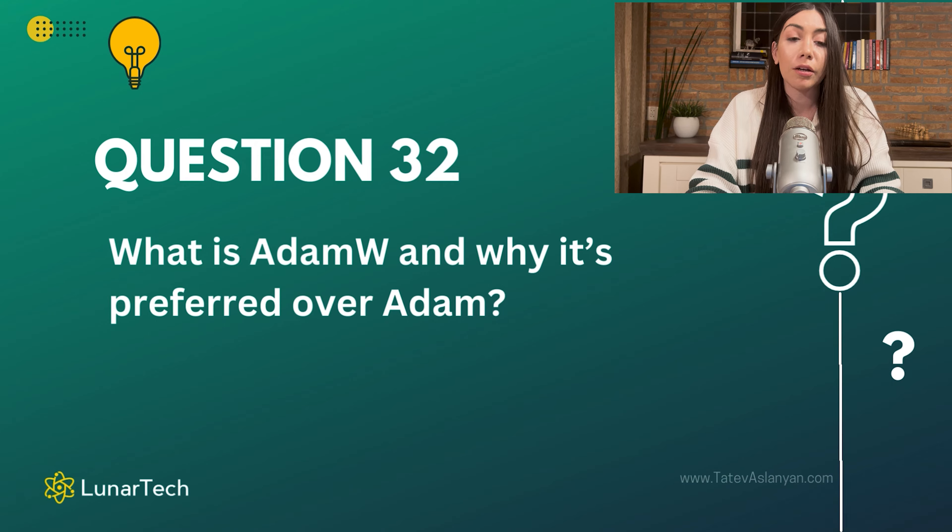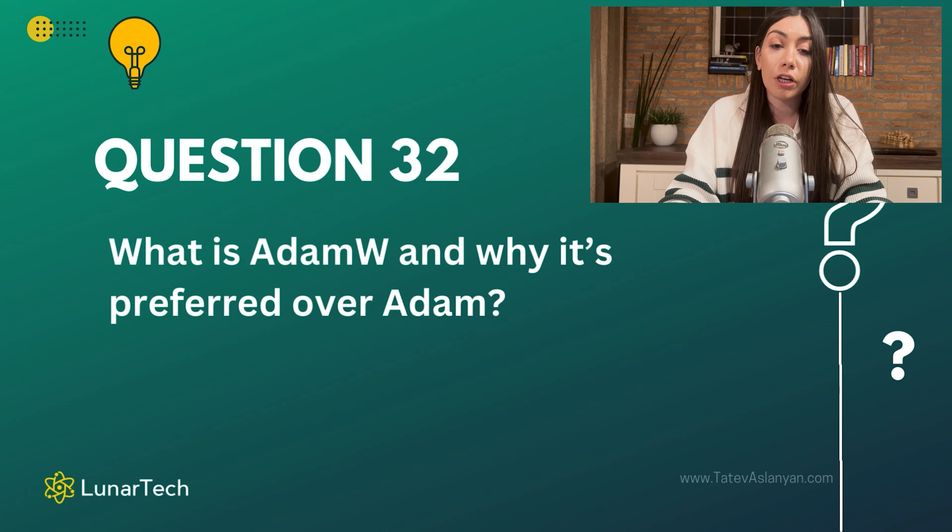So like Adam, AdamW is an adaptive optimization algorithm that is used to optimize the training of a neural network and to find the minimal point of the loss function by continuously adapting the learning rate and updating the model parameters.